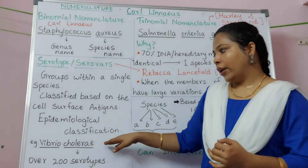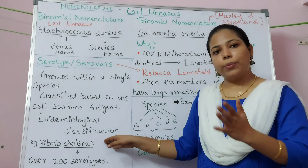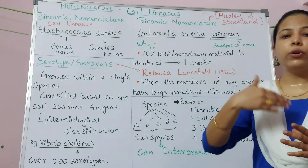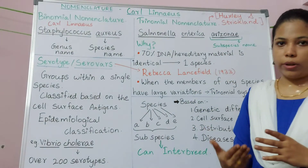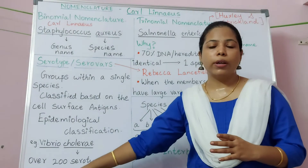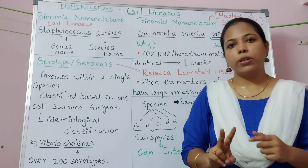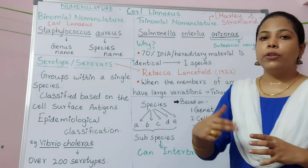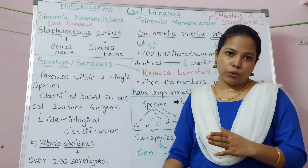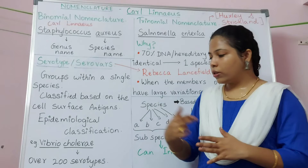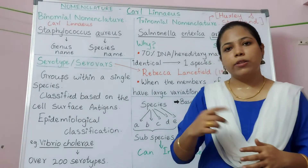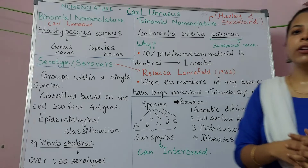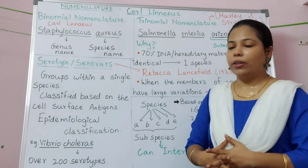An example is Vibrio cholerae. Vibrio cholerae has more than 200 serotypes. Out of these 200 serotypes, only two have the potential to create a potent enterotoxin — those serotypes are O1 and O139.